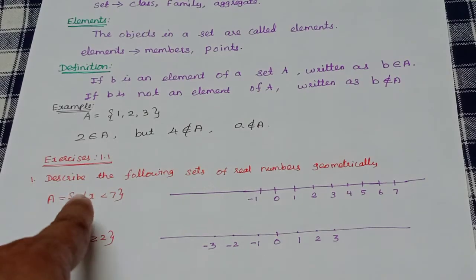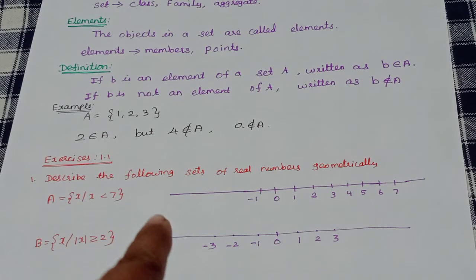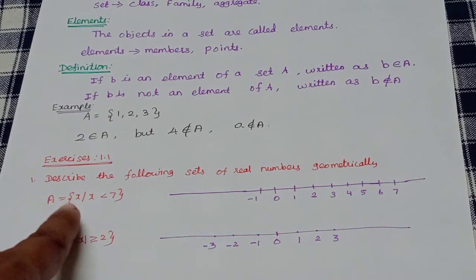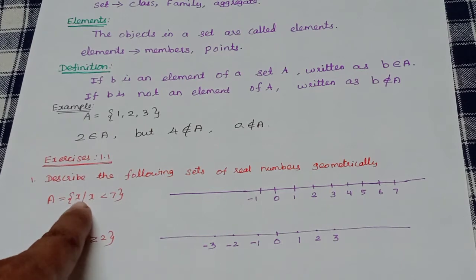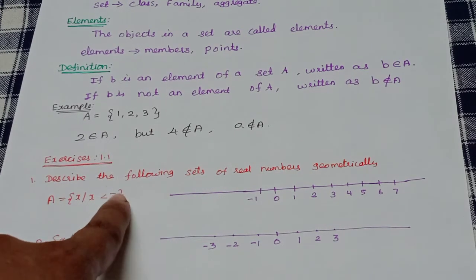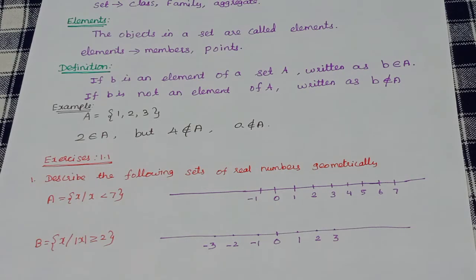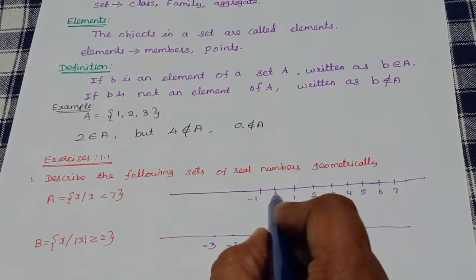Now let's describe the following sets of real numbers geometrically. Geometrically, it is a set. What is a set? Set A equals the set of x such that x is less than a. A is equal to the real line. You can represent it here — that means A is equal to A.